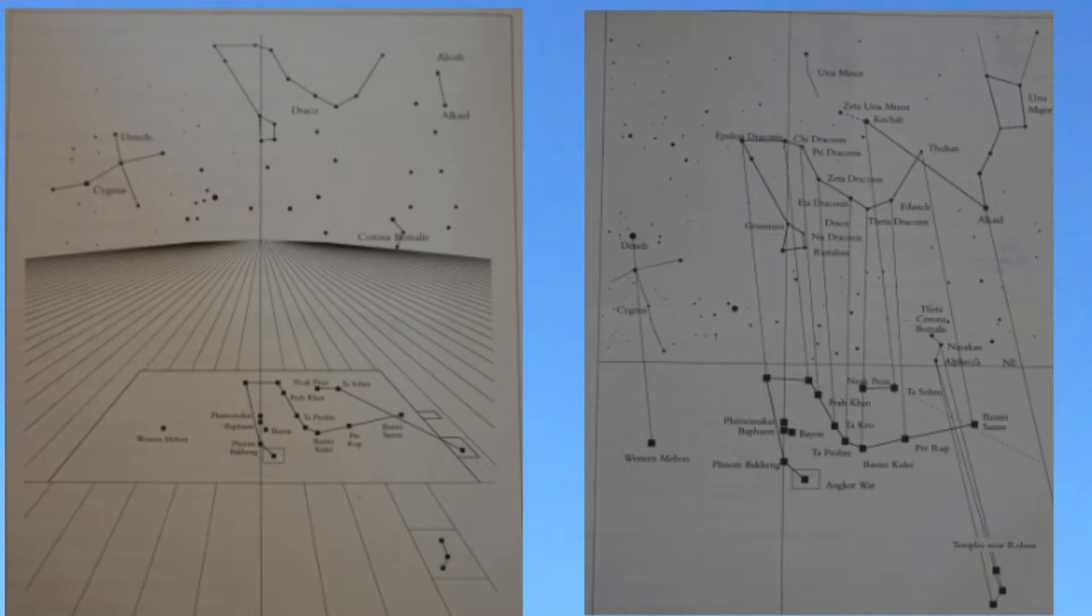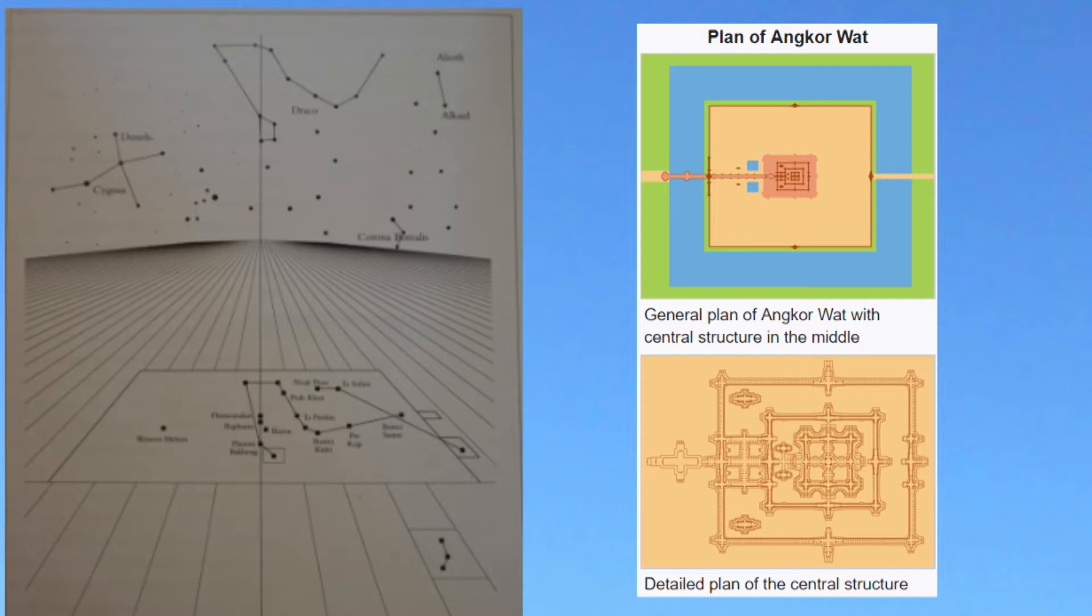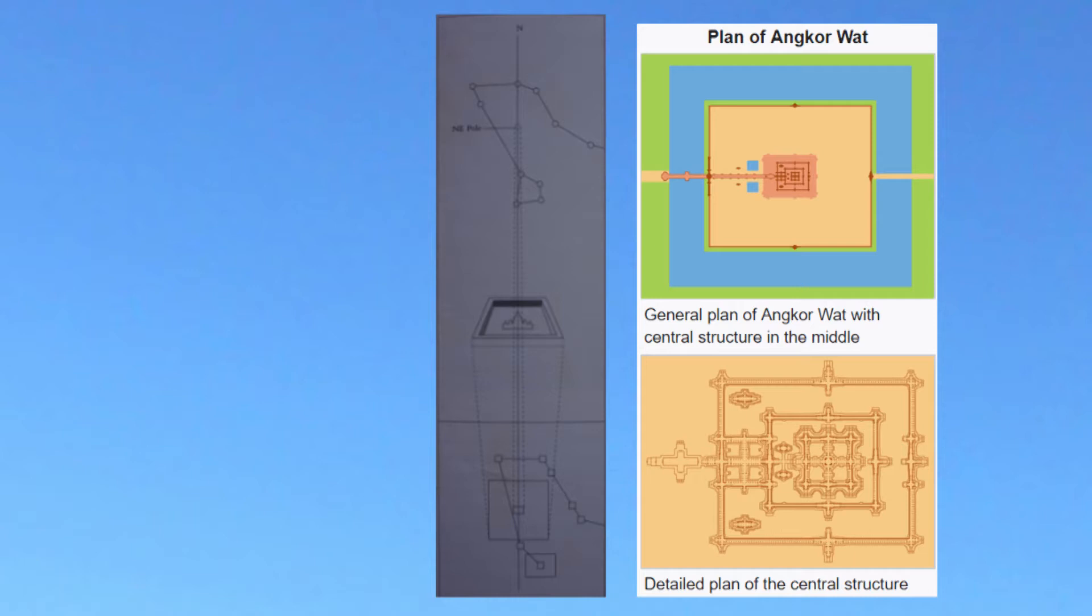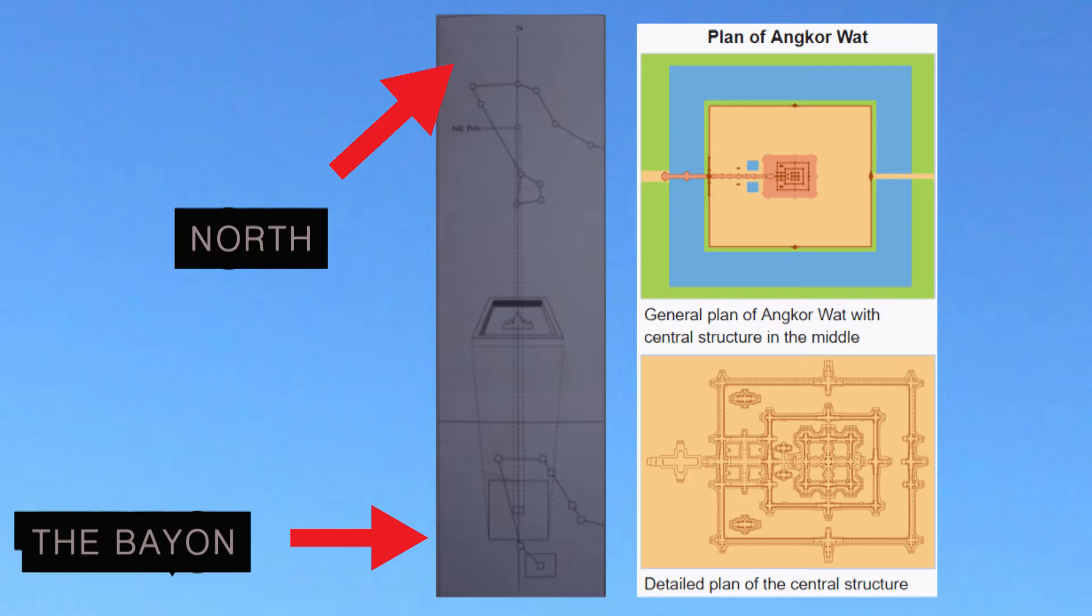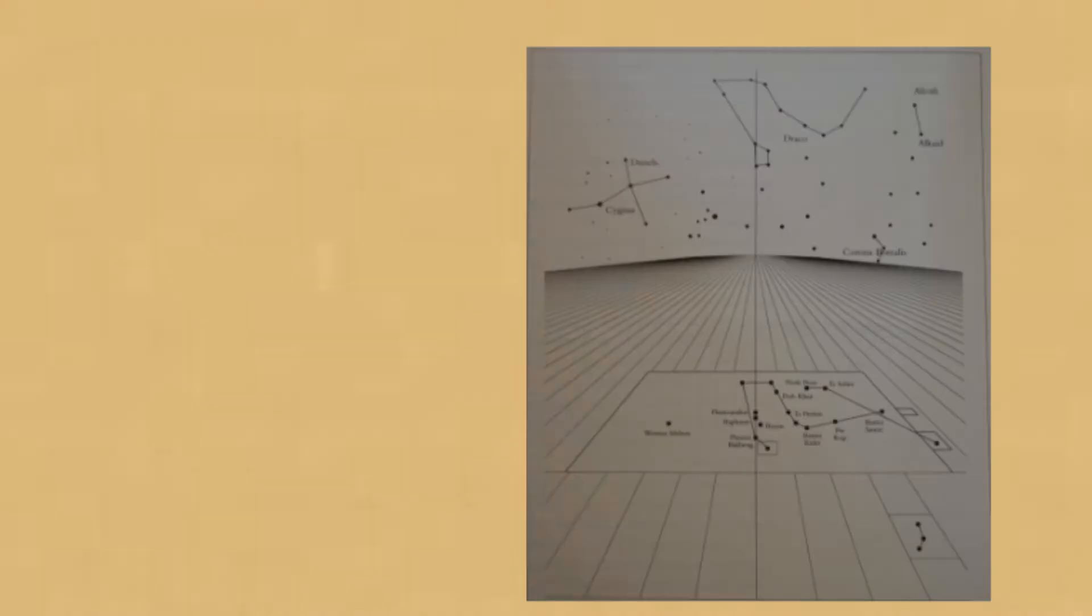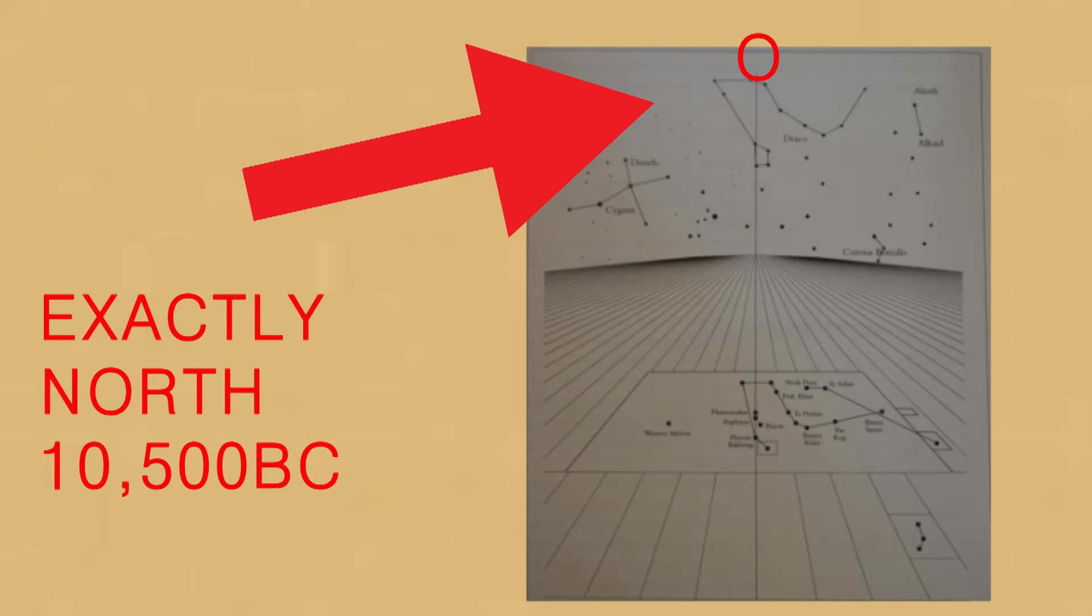Furthermore, if you look amongst the temples mirroring the Draco constellation, in the center is the breathtaking edifice known as the Bayon, which is regarded as Jayavarman VII's finest architectural achievement. So is it an accident that within the overall celestial plan of the temples, the heart of the Bayon is correlated to the location of the ecliptic north pole at exactly the center of the Draco constellation at precisely 10,500 BC.